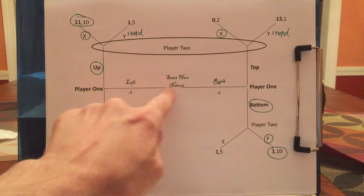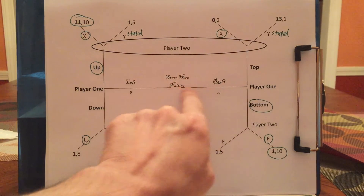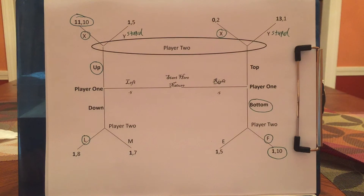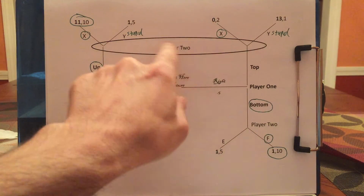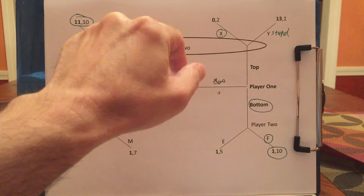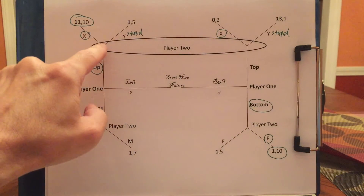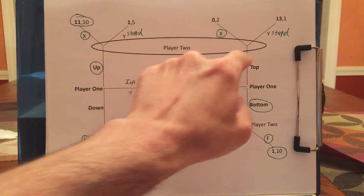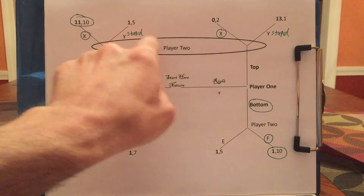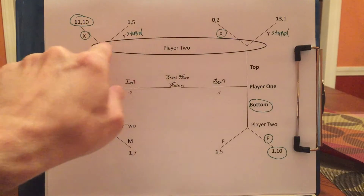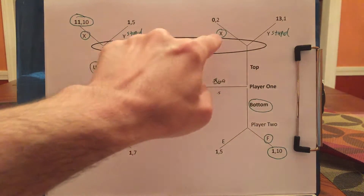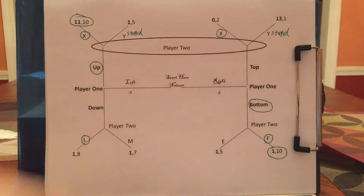Player 1 will realize this. If nature makes him a lefty, he'll know down will give him 1. And if nature makes him a righty, bottom will give him 1 as well in this game. Now, what should player 2 do if he's told he's up here? Player 2 is uncertain if he's here or here. If he knew he was on the left, he would want X because 10 is greater than 5. And if player 2 knew he was on the right, he'd also want X because 2 is greater than 1. That makes Y a stupid strategy — no matter where player 2 is, he gets a higher payoff from X than from Y. So player 2, if he finds himself in this information set, will always play X.